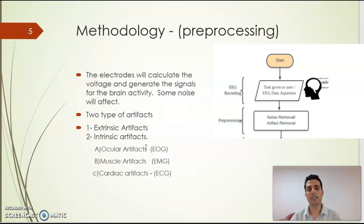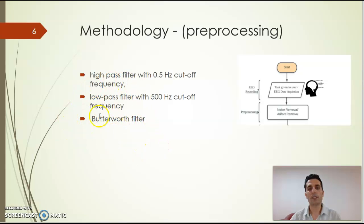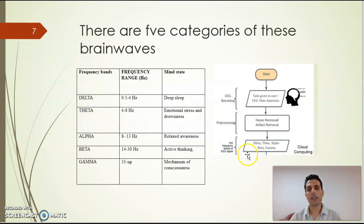These noises affect the signal quality and prevent us from extracting useful information, so we need to remove them. In this study we propose to use high-pass, low-pass, and notch filters. After obtaining the clean signal, we can categorize it into five main categories based on frequency bands, and in this study we propose to use the alpha and beta bands.